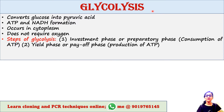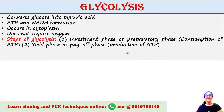Steps of glycolysis. Glycolysis occurs in two stages: the investment phase, also called the preparatory phase, wherein ATP is consumed; and the yield phase, also called the payoff phase, wherein ATP is produced.